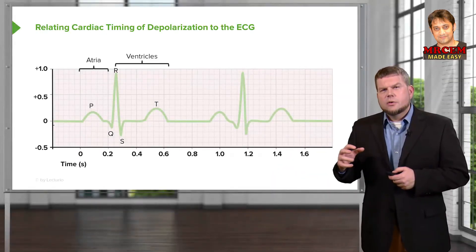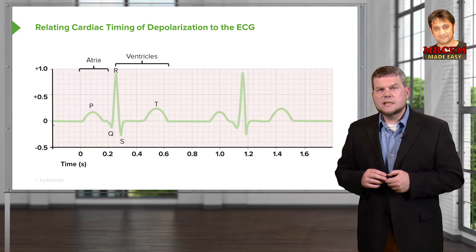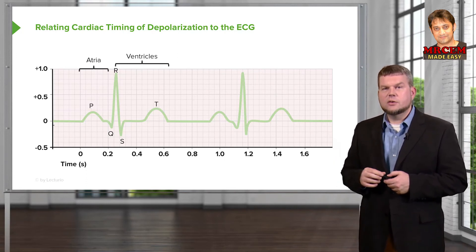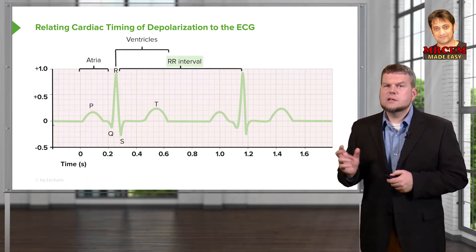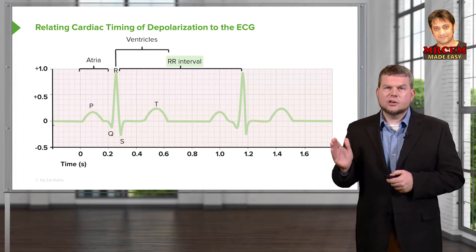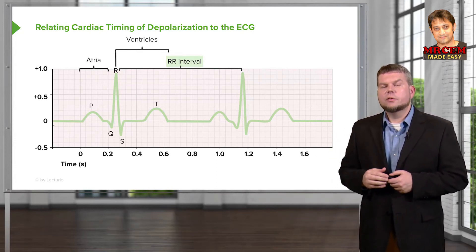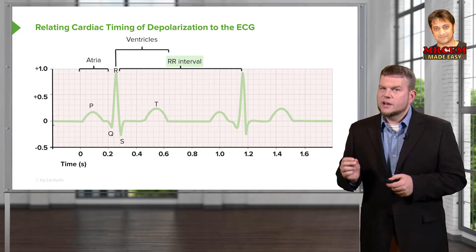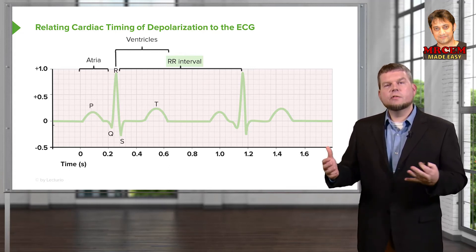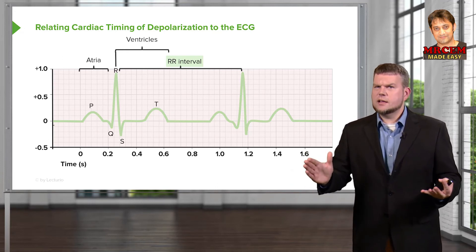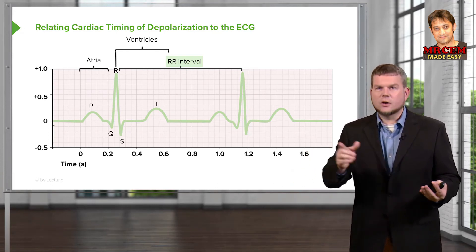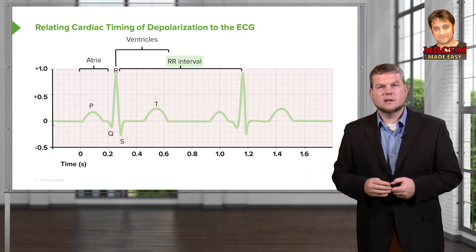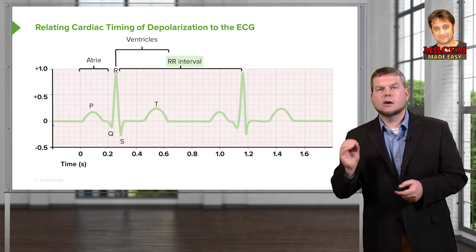Let's go through these processes in more detail and add some intervals beyond just the PR interval and the QT interval. The biggest one is called the R-to-R interval, which goes from one R wave all the way to the next R wave. This is important because it determines how often your ventricles depolarize — in other words, heart rate. It's how fast the heart is beating, how many times it depolarizes.